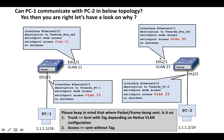EVA Switch 1 sends an untagged frame towards EVA Switch 2. EVA Switch 2 receives that frame on Ethernet 2/1, which is part of VLAN 21. Switch 2 checks if it has any port in VLAN 21 — it has Ethernet 2/2 in VLAN 21 — so traffic from PC1 will go to PC2. We are able to ping and send traffic from PC1 to PC2.